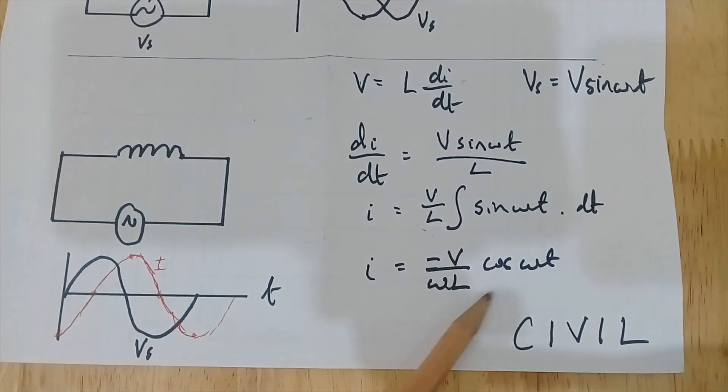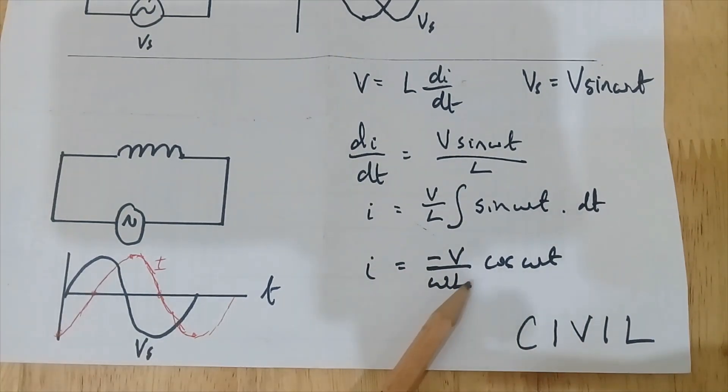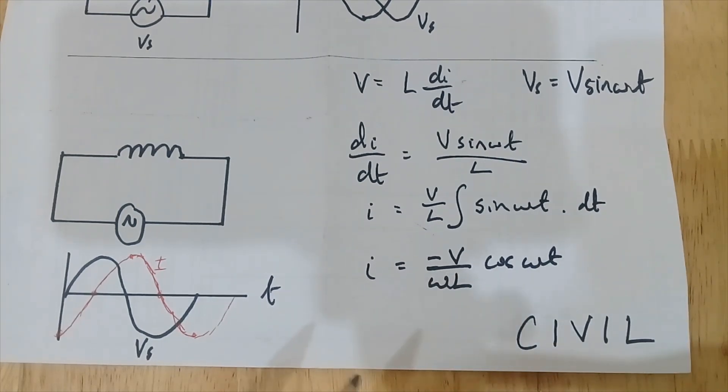The integral of sine is minus cosine, so I get minus V over ωL. This bit I'm not really worried about for the purposes of this explanation, but what I am worried about is the minus cos(ωt).